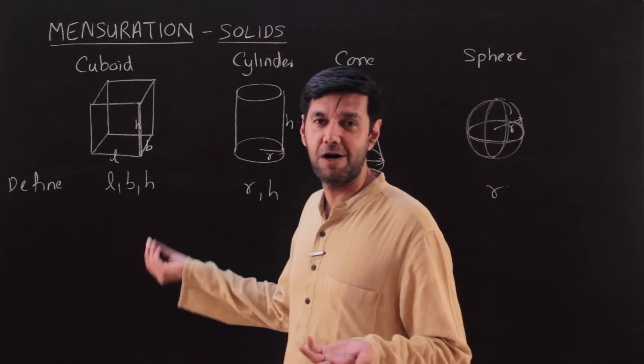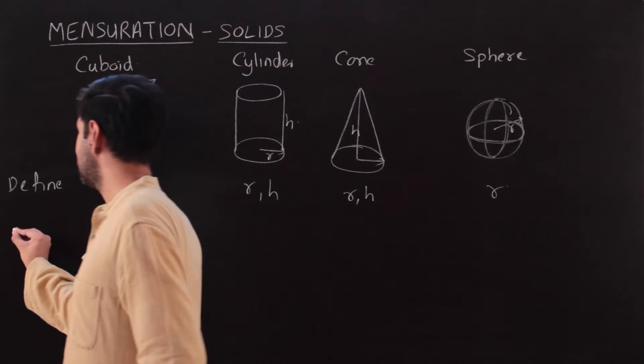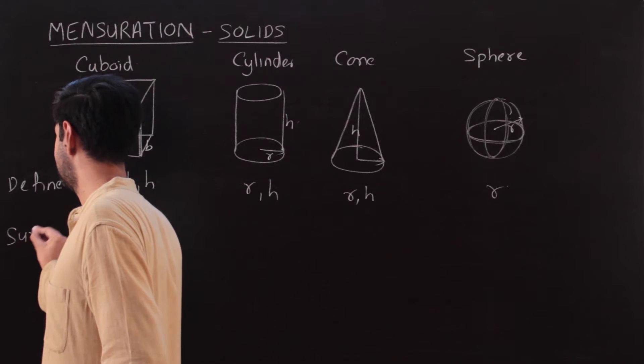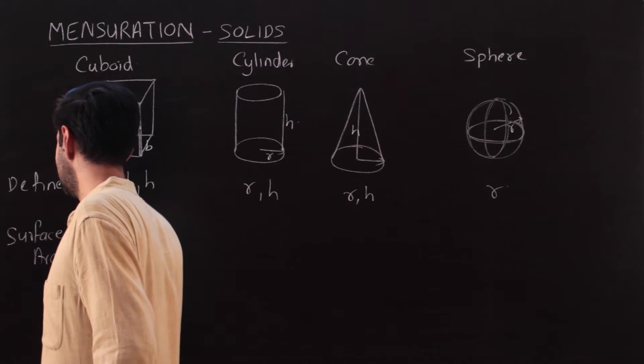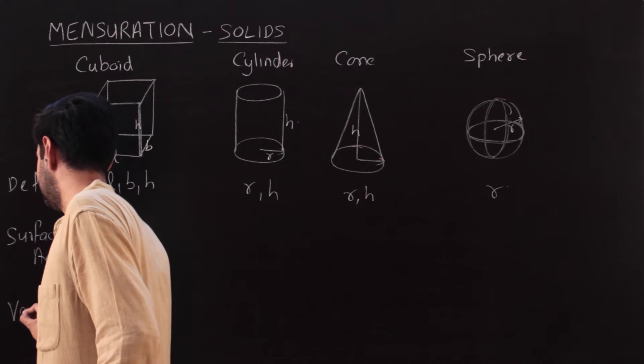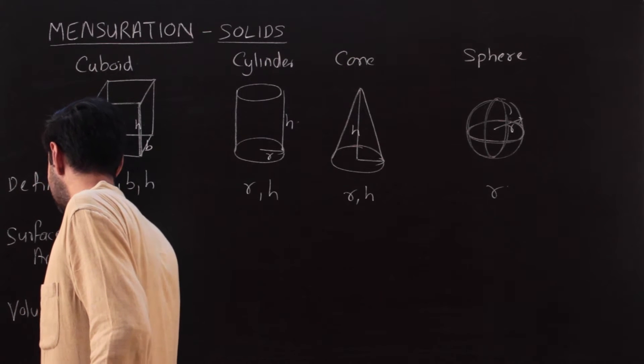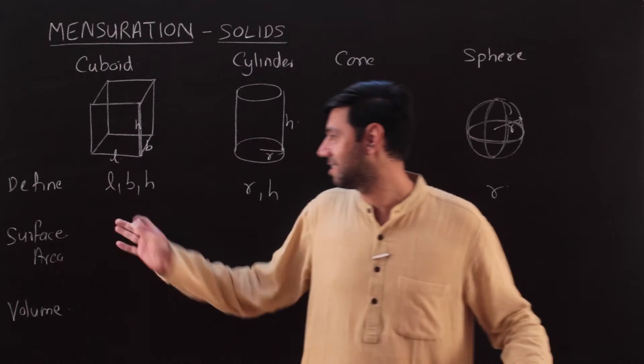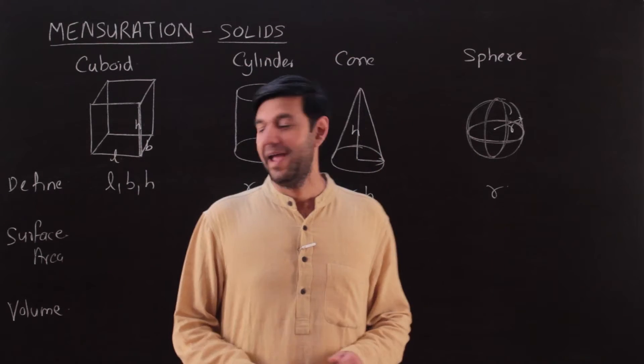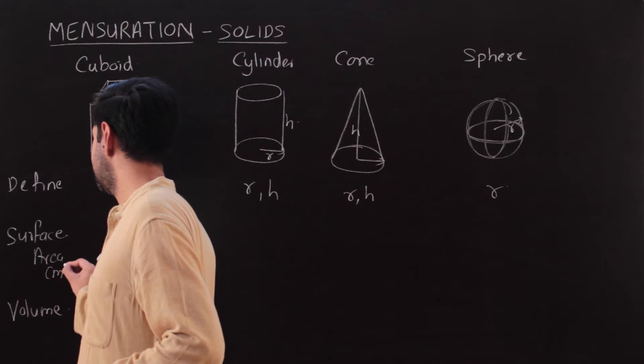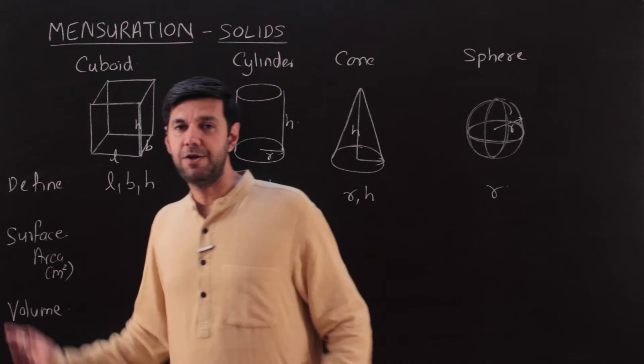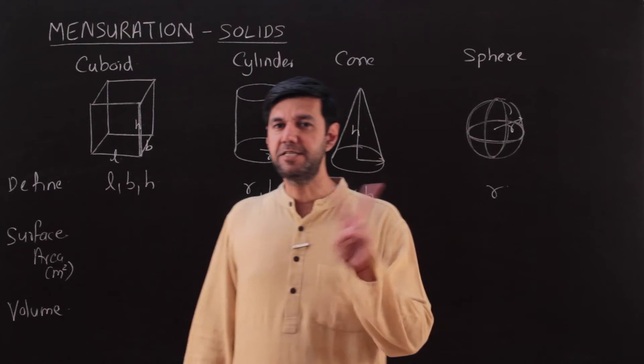We have defined them. What else do we need? What are those formulas? There is something called surface area. We will look at the surface area formulas, and then we will look at volume. This is the standard textbook part.